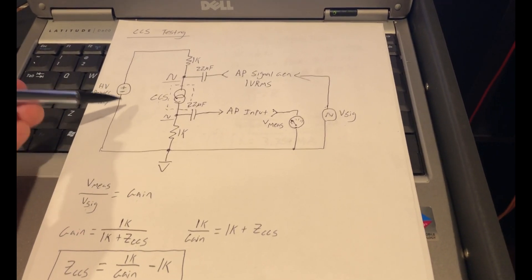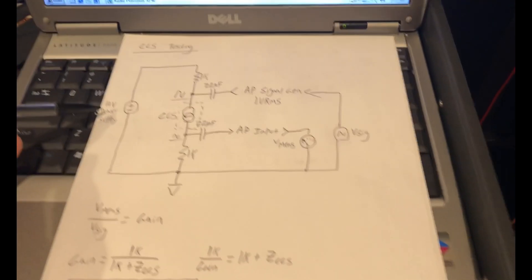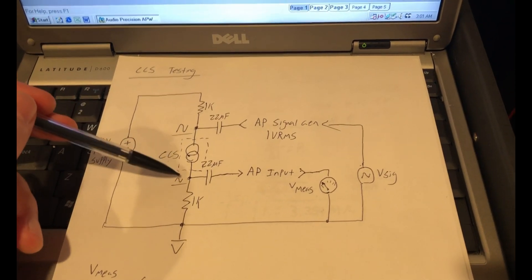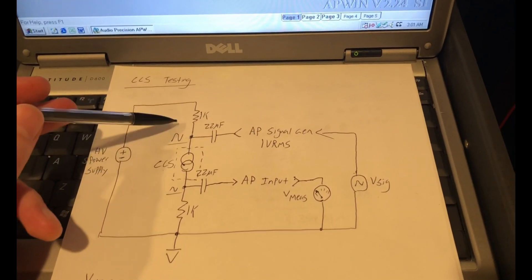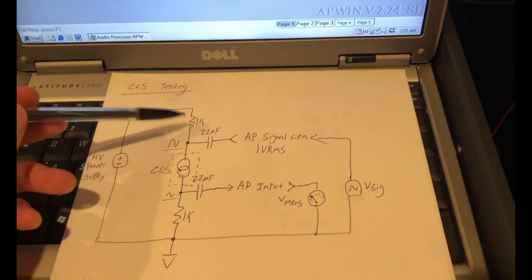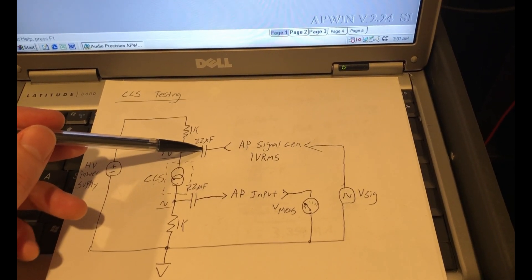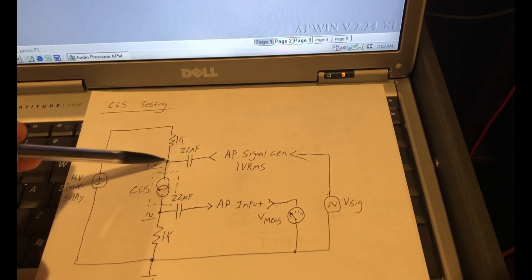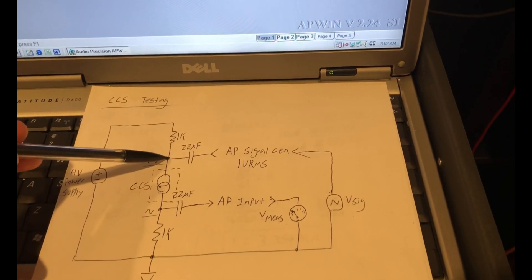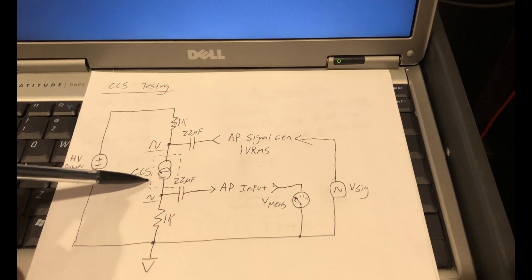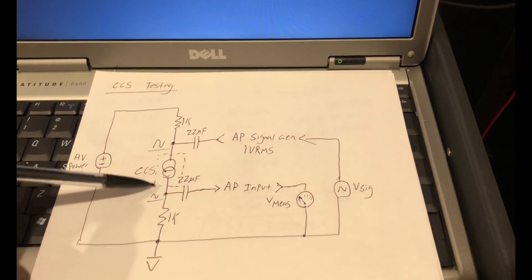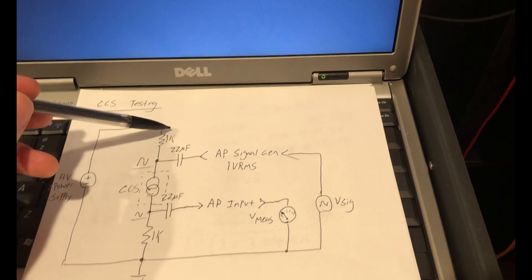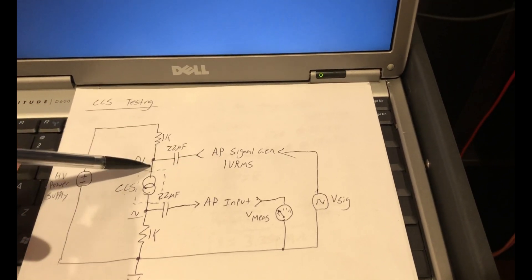So this drawing here shows the test setup I've currently got implemented on the bench where we're using the high voltage power supply and biasing our constant current source. Here I've drawn it as a black box as an idealized constant current source with a high side and low side resistor. This node here with this 22 microfarad capacitor allows us to isolate the DC operating point from our audio precision and actually inject a test signal onto this node from our AP. If this was just a short from our power supply, the AP could not inject a signal onto this node.